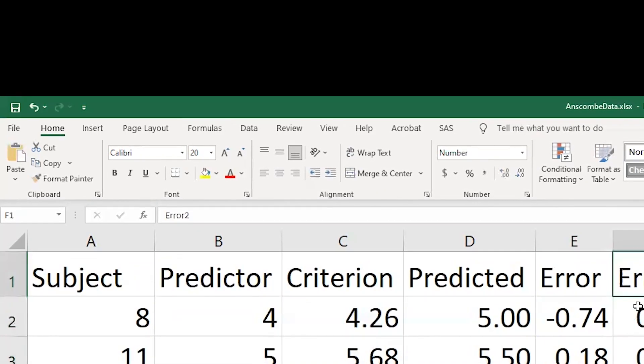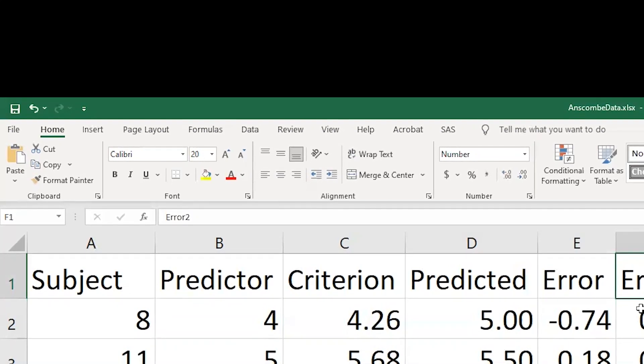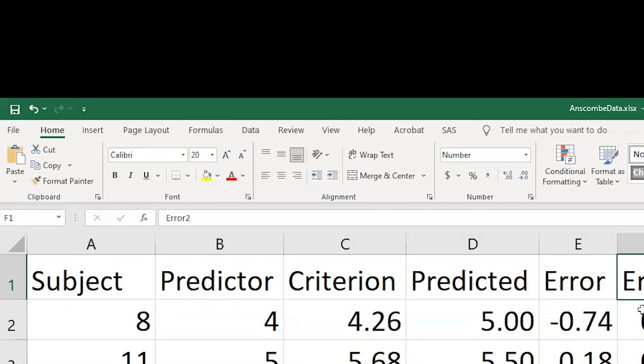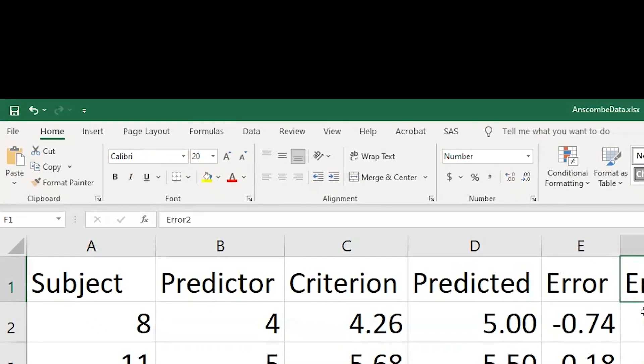So the regression, if I draw any other line through the data, I'm going to get a value that's going to be larger in terms of squared errors of prediction than the least squares regression line.